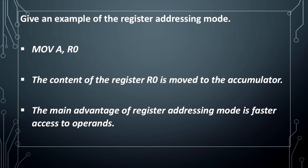Example of register addressing mode: MOV A, R0. The content of register R0 is moved to the accumulator. The main advantage of register addressing mode is faster access to operands.